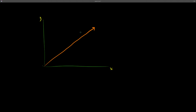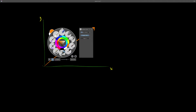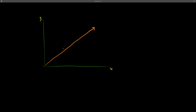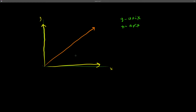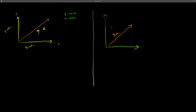When we have a vector on a coordinate plane with X and Y axes, we need to take components to calculate the resultant. Components are the projection of the vector onto the Y axis and the X axis. The X-axis component is only the horizontal part of the vector, and the Y-axis component is only the vertical part. Using these components, we can calculate the resultant R.